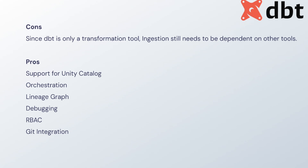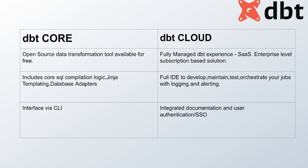When it comes to pros, dbt has good orchestration support - you can orchestrate your data pipelines. If you have table A created from table B, and table B created from table C, you can actually see the lineage graph in dbt. It also supports debugging, which was introduced more recently. It supports role-based access control and has git integration. If you are in the Databricks space, dbt also supports Unity Catalog tables.